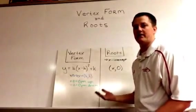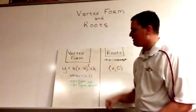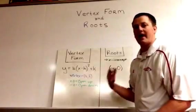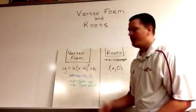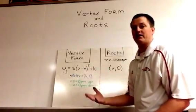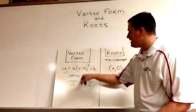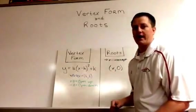One thing that we need to know with the vertex is if you see a minus sign in front of the h, that actually means that the h value is positive. If you see a plus sign in front of the h, that actually means that the h value is negative. The h represents the x value of the vertex.